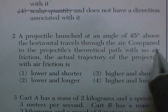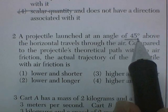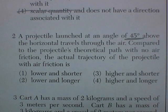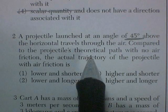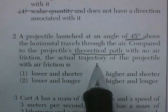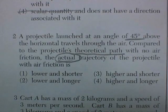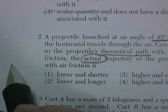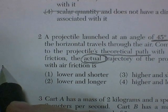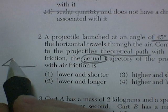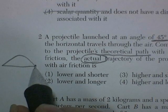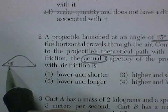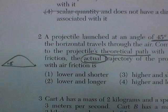Question 2. A projectile launched at an angle of 45 degrees above the horizontal travels through the air. Compared to the projectile's theoretical path, the actual trajectory will be... Well, let's do the theoretical first. You throw it, and at 45 degrees, it will achieve maximum range.